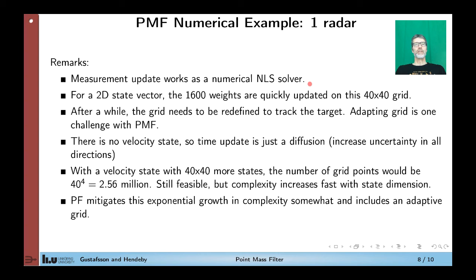So to summarize this example, to get some take-home messages. First I mentioned that the measurement update works as a numerical non-linear least-squares solver. So you get the peak of the banana in a numerical way. For this two-dimensional state vector with a 40x40 grid, there are 1600 weights. And these weights are quickly updated on the computer, so it doesn't take any time. As you noticed, the target moved. And after a while it will move outside the grid. So there is clearly a need to adapt the grid to the moving target. And that's an implementational challenge. How to move the grid. And maybe also to refine the grid.